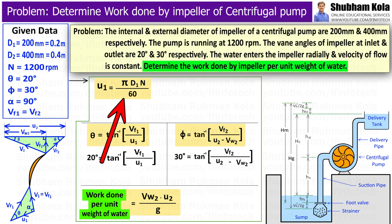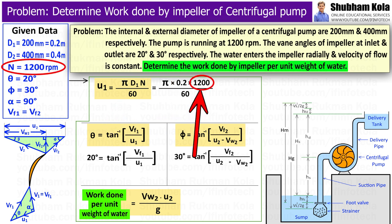That is U1 equal to pi times D1 times N divided by 60, where D1 is 0.2 and N is 1200. Therefore, by calculating this, the value of U1 is equal to 12.57 m per second.